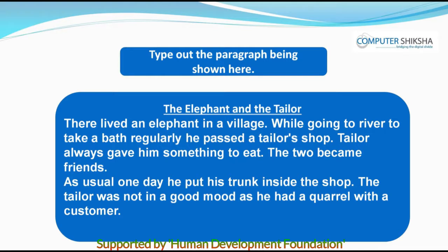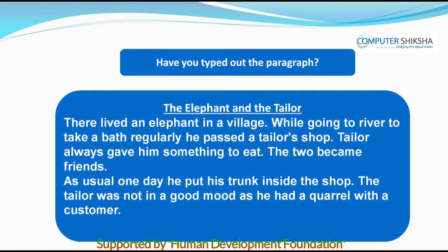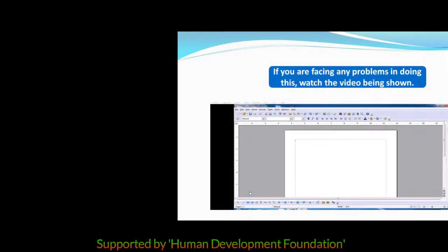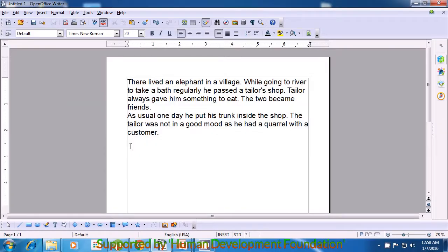Type out the paragraph being shown here and then practice one by one. Have you typed out the paragraph? Now you will save your file. If you have any doubts, watch the video and learn. Let us watch this video and see how we can save a Writer file.